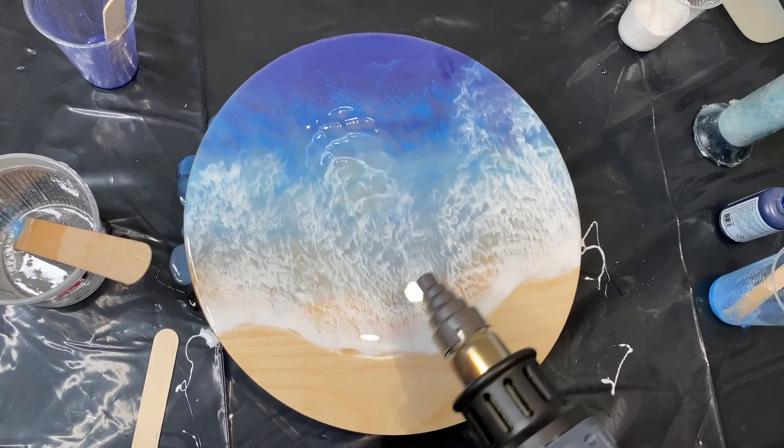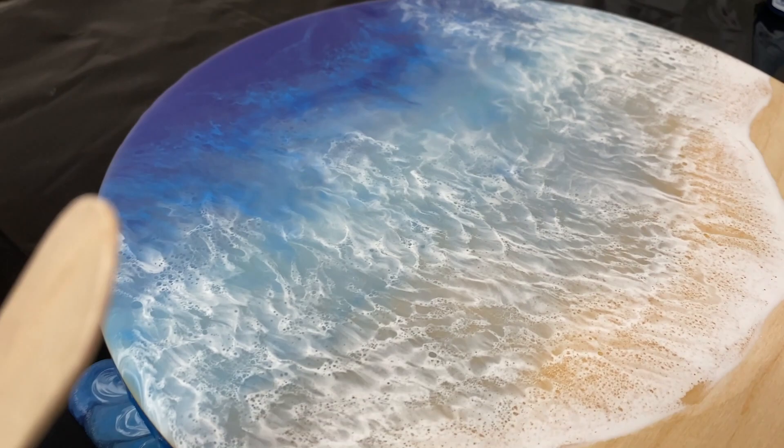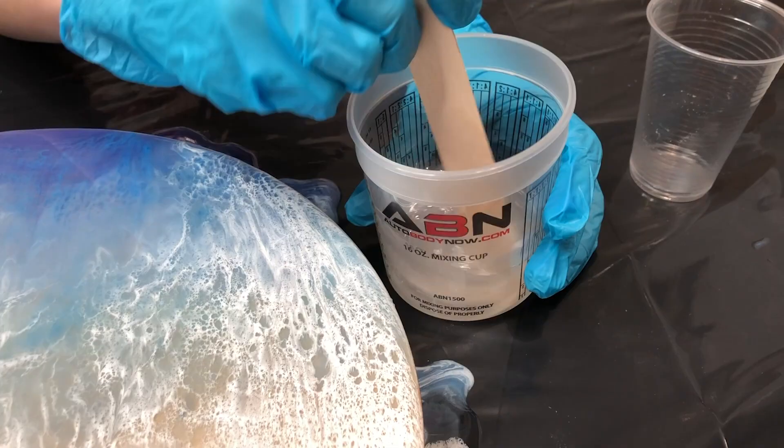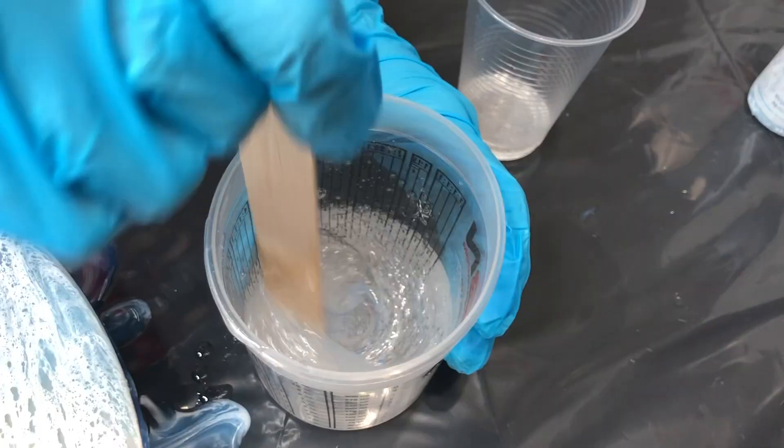Most resin companies recommend waiting at least six to eight hours before applying a second layer to your piece. Of course there's lots of variables in this, such as the heat of your room or the humidity or the pigments you're using.